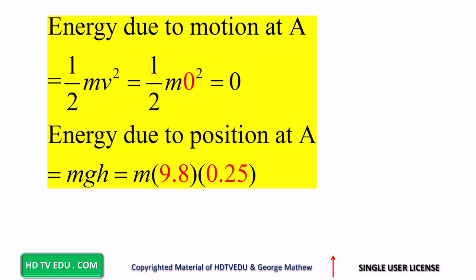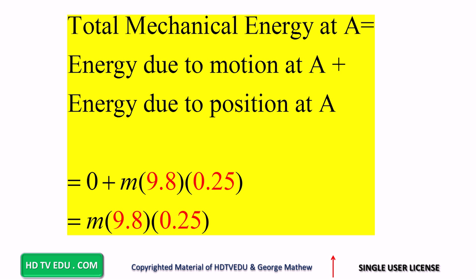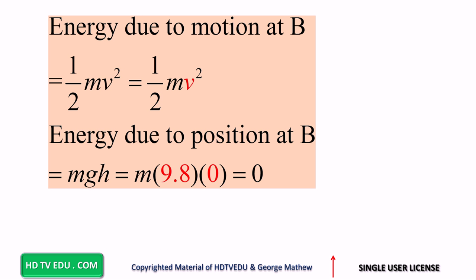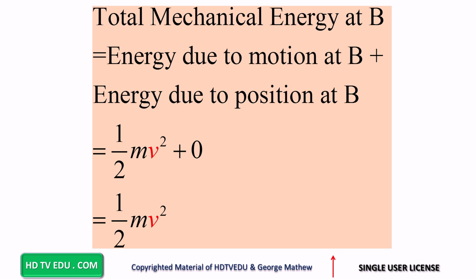Energy due to motion at point A is zero, since speed is zero. Energy due to position at point A is mgh, where m is the mass in kg, g is the acceleration due to gravity in meters per second per second, and h is 0.25 meters. So total mechanical energy at A is zero plus m times 9.8 times 0.25. At point B, energy due to motion is one-half mv squared. Energy due to position at point B is zero, because point B is at zero height from the zero level. Total mechanical energy at point B is one-half mv squared.